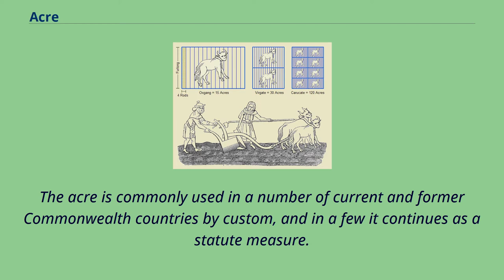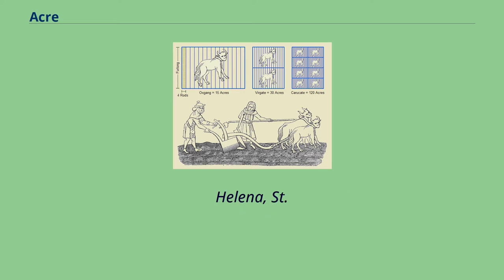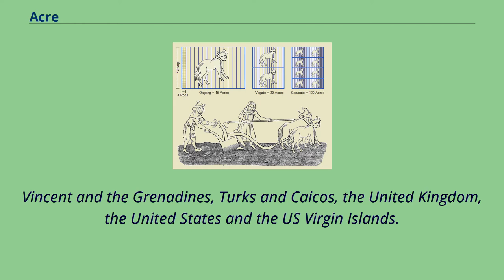These include Antigua and Barbuda, American Samoa, the Bahamas, Belize, the British Virgin Islands, the Cayman Islands, Dominica, the Falkland Islands, Grenada, Guam, the Northern Mariana Islands, Jamaica, Montserrat, Samoa, St. Lucia, St. Helena, St. Kitts and Nevis, St. Vincent and the Grenadines, Turks and Caicos, the United Kingdom, the United States, and the U.S. Virgin Islands.